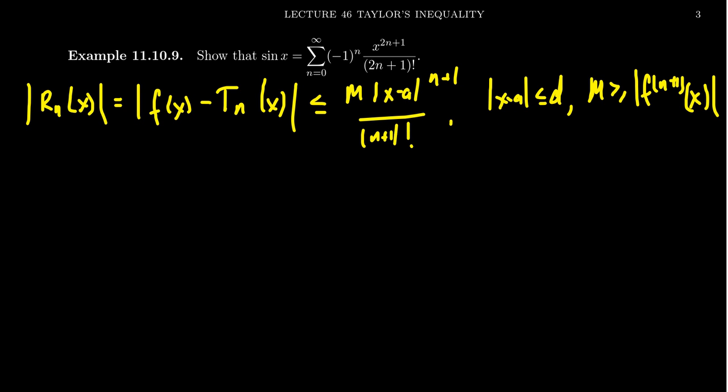We're working with the Maclaurin series, so we get a little bit of simplification here. The a value is going to equal 0, so we're going to have that the absolute value of x is less than d. And so we have to look for some upper bound m that's greater than or equal to the n plus 1st derivative when x's absolute value is less than d.